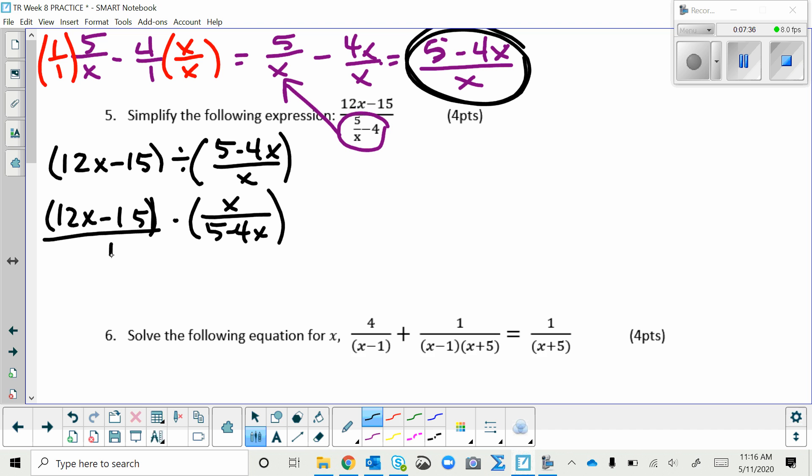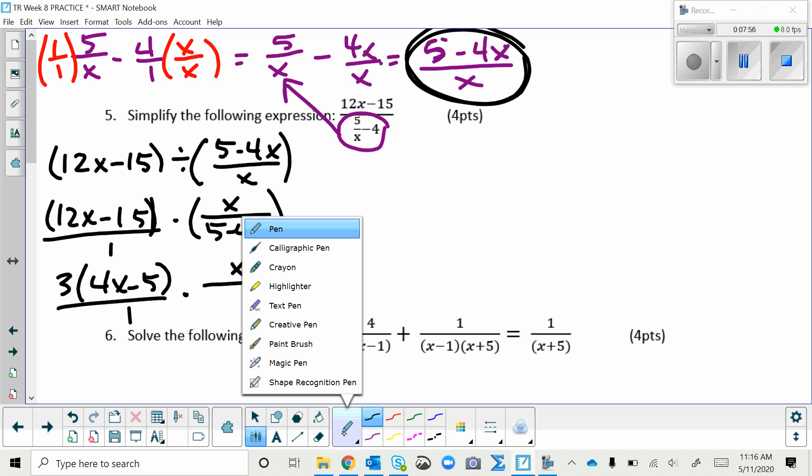Now do GCF on the left numerator, 12X minus 15, greatest common factor is a 3. Now remember that 5 minus 4X, we want to divide out the negative 1 as a GCF.